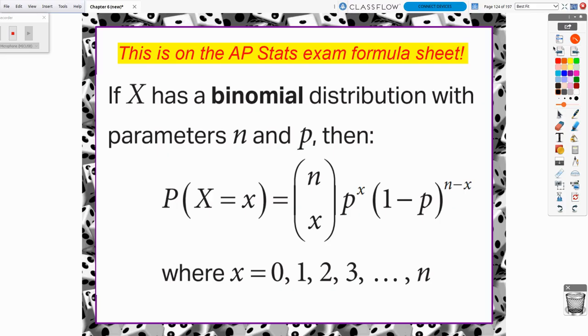Now, thankfully, on the AP Stats exam formula sheet, this formula is on there. So you don't have to have it memorized. You just got to be able to find it on the sheet. So here is the formula. When x is a binomial distribution, and you have to know that it follows a binomial distribution first, with parameters n and p, and n represents the number of trials, and p represents the probability of success that has to stay constant in a binomial distribution.